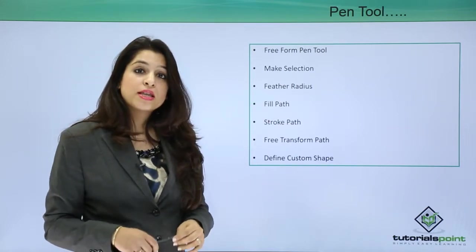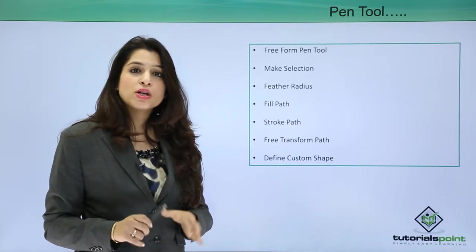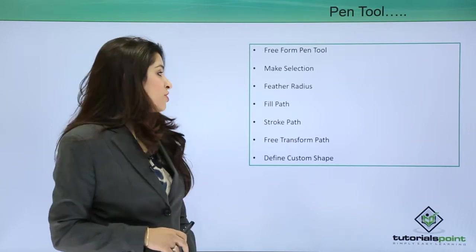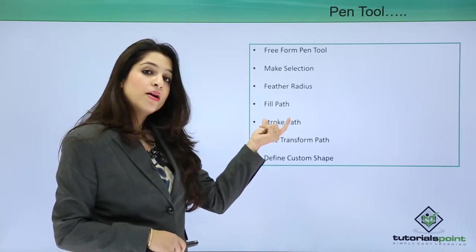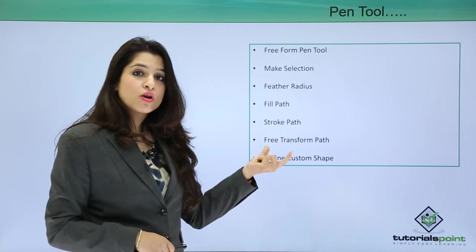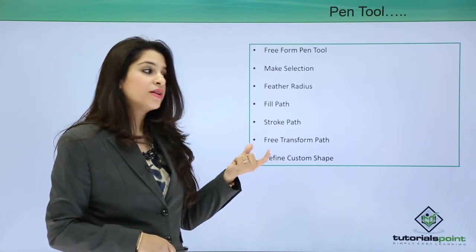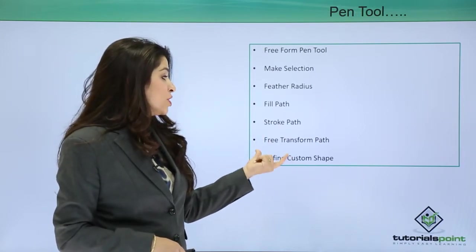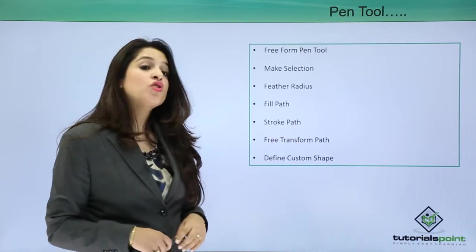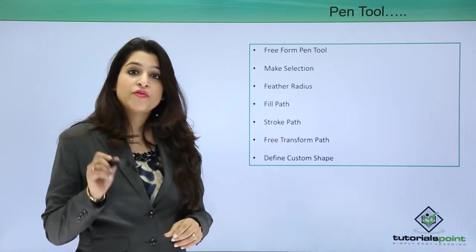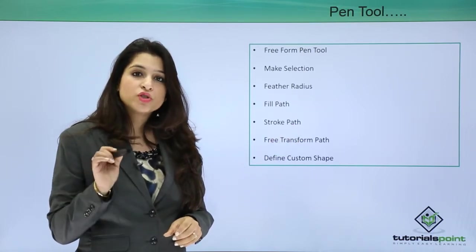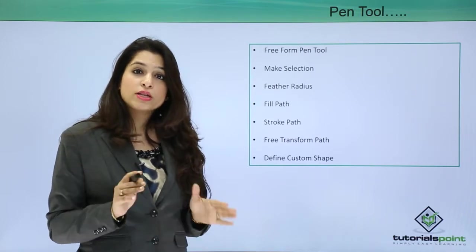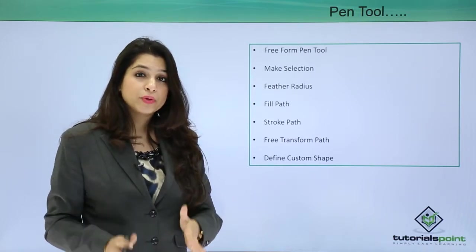You can feather the radius, meaning you can choose hard edges or soft edges around the selection. You can fill the path, stroke an outline around the path, convert it using free transform, and also define a custom path which will remain saved with you.